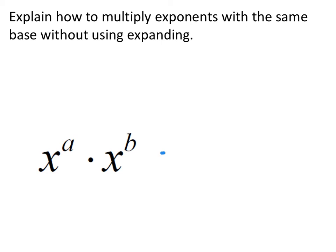And so we can look at this more abstractly. If we have two bases that are the same being multiplied together, which in this case is x, then we simply add the exponents, which in this case is a and b.